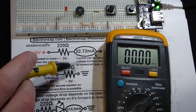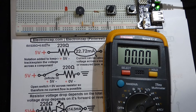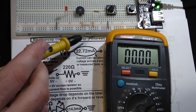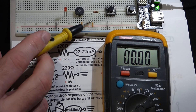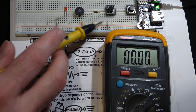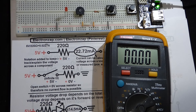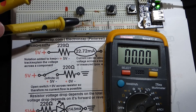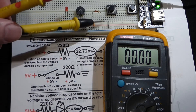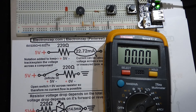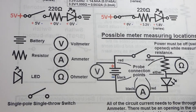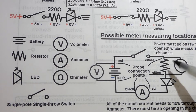We calculated 22.72 — almost 23 — and we got 22, so that's very close. A couple things to be aware of: there is resistance wherever we make these connections, including through the meter, the probes, and how the connections are made. So we would expect the current to be a little bit lower, because we had slightly more resistance than just the resistor alone.